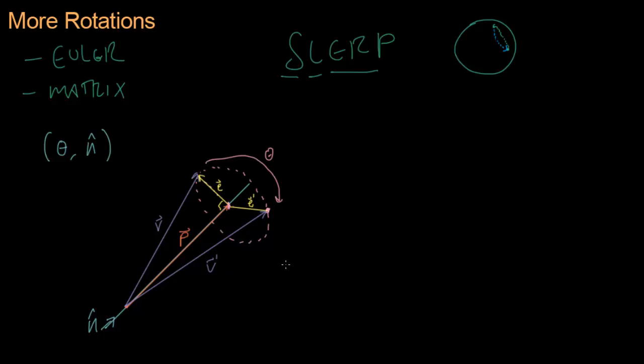This is the rotated vector, V prime. And you can see that that's P plus E prime. So let's see here, V prime equals P plus E prime. That's pretty simple.